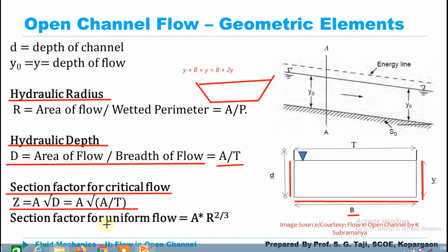The section factor for uniform flow is given by A × R^(2/3), and for critical flow it is given by Z = A × √D, or equivalently √(A³/T). Remember these expressions — you don't need to memorize them because when we derive those equations or make use of them in later sessions, you will recall them naturally.